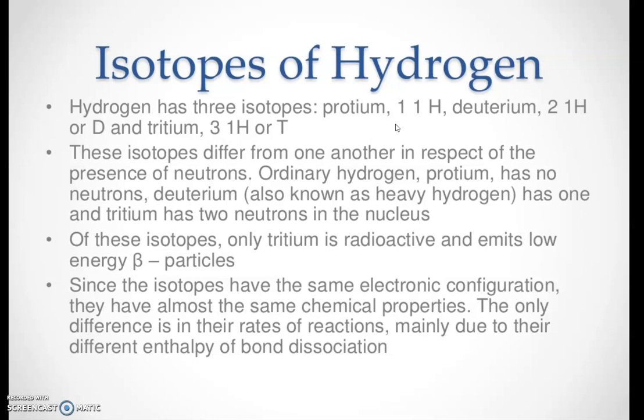Since the isotopes have the same electronic configuration, they have almost the same chemical properties. The differences are mainly in their physical properties — such as rates of reaction and enthalpy of bond dissociation — due to their different mass numbers.